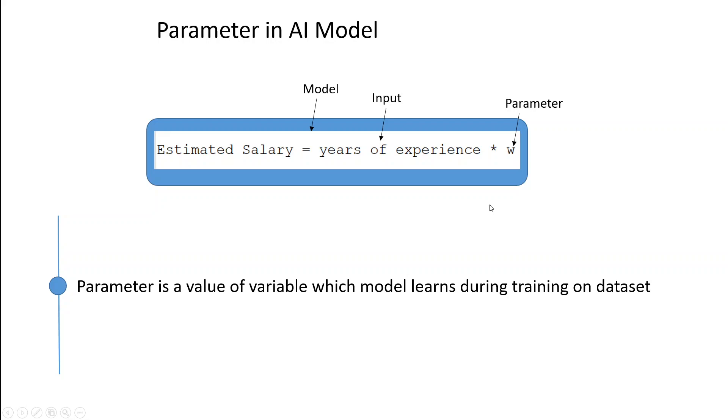If the value of W is large, it means that each additional year of experience has a significant impact on the salary prediction. If the value of W is small, it means that years of experience have less influence on the salary prediction.